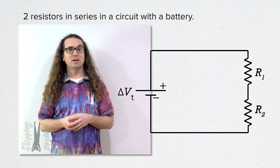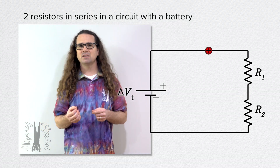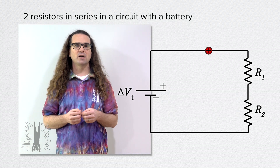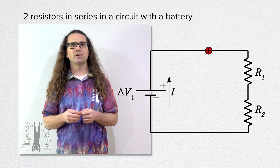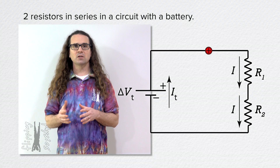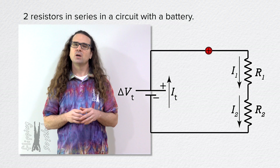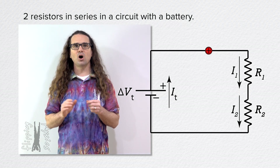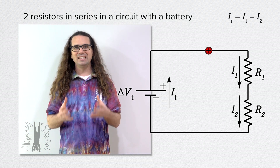We start with a circuit with a battery and two resistors in series. Because a positive charge would be repelled from the positive terminal of the battery and attracted to the negative terminal, the current in this circuit is clockwise — up through the battery and down through each resistor. Let's label those currents as the terminal current through the battery, and current 1 and current 2 through their respective resistors. Each charge on the wire has to go through all three circuit elements, therefore all of these currents are equal.